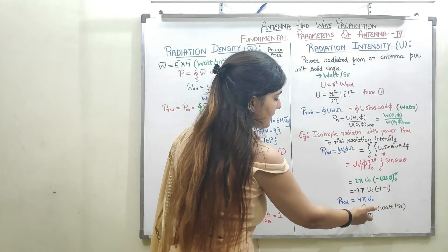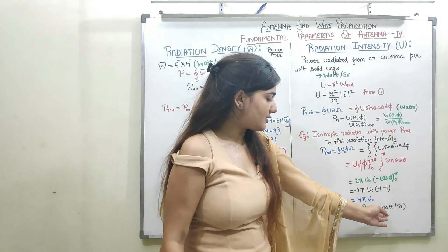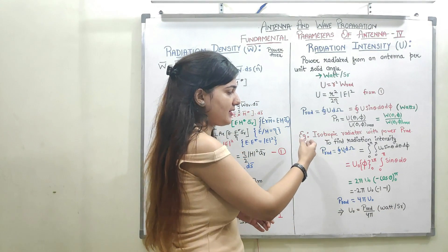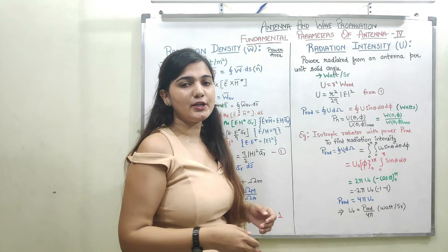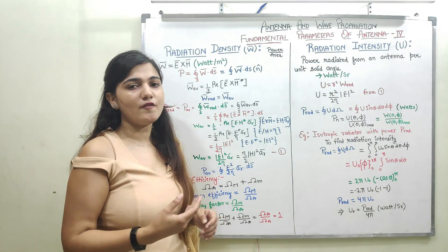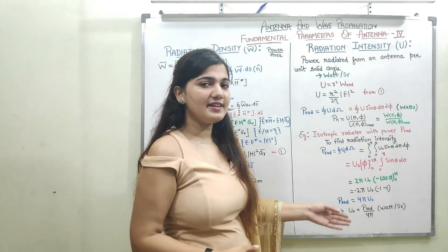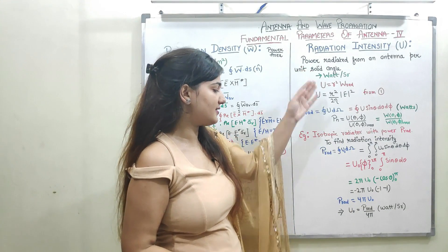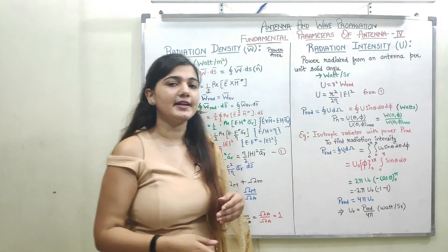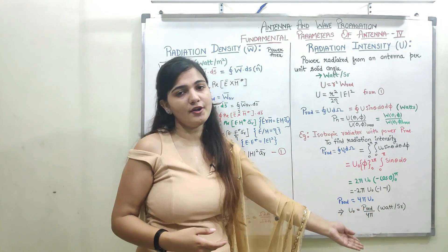From this result, radiation intensity U₀ equals the radiated power divided by 4π. This makes physical sense: an isotropic radiator radiates in all 360 directions, so the total beam area over which it radiates is 4π steradians — the entire spherical surface. This is consistent with the definition of radiation intensity as power radiated per unit solid angle, giving U₀ = P_rad / 4π.